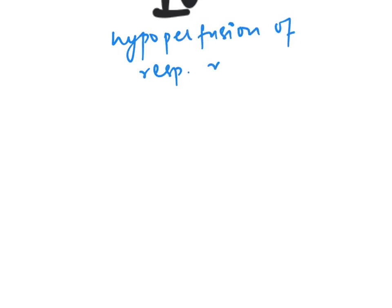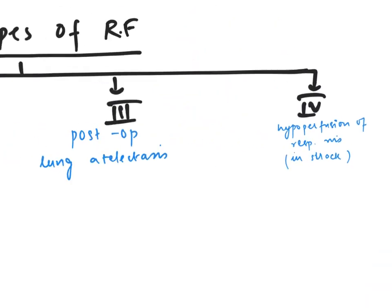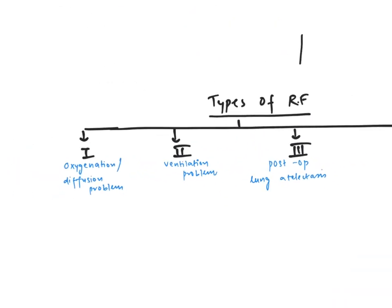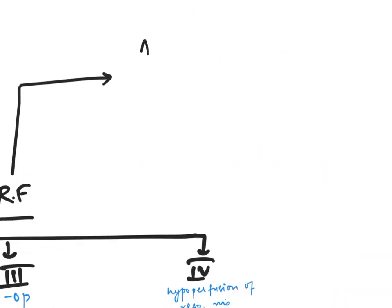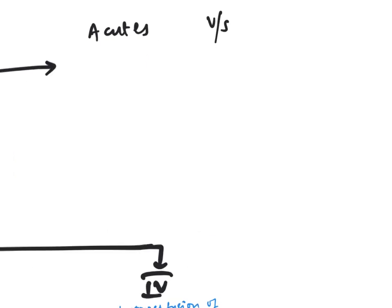Type 4 is seen in shock — like septic shock and all kinds of shock. The second classification of respiratory failure is acute versus chronic respiratory failure.